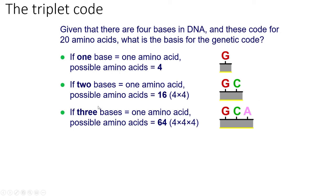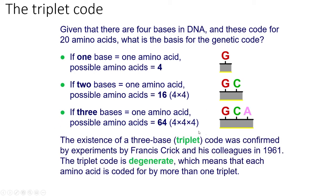This triplet code is what's called degenerate. While there are 64 possible combinations, some amino acids are coded for by more than one triplet. Despite the fact there are 64 possible combinations, we only end up with 20 different amino acids.